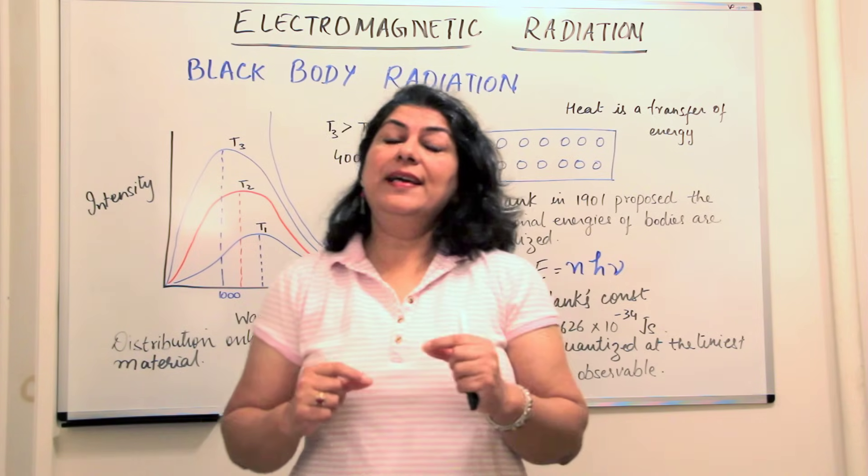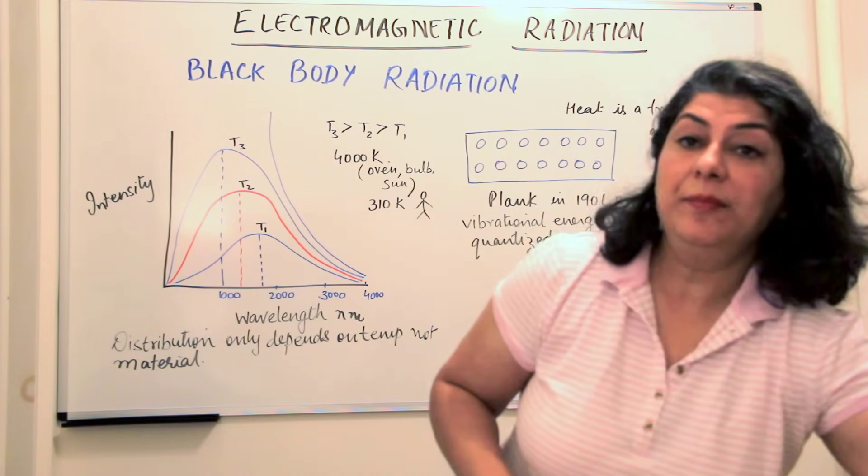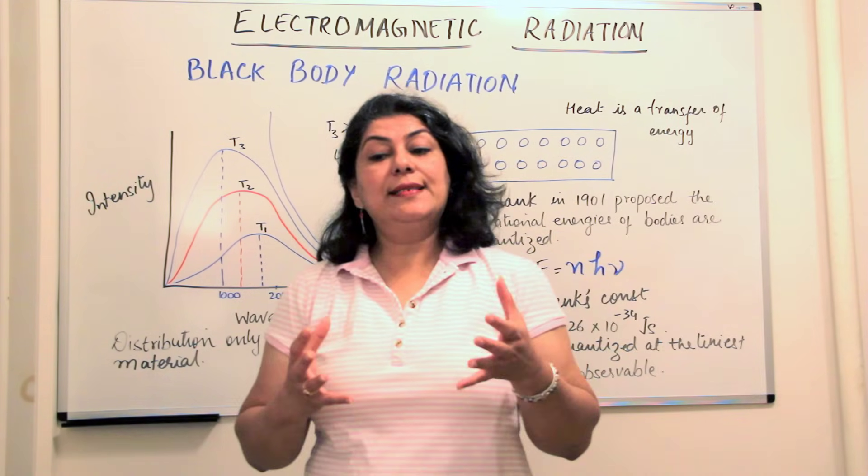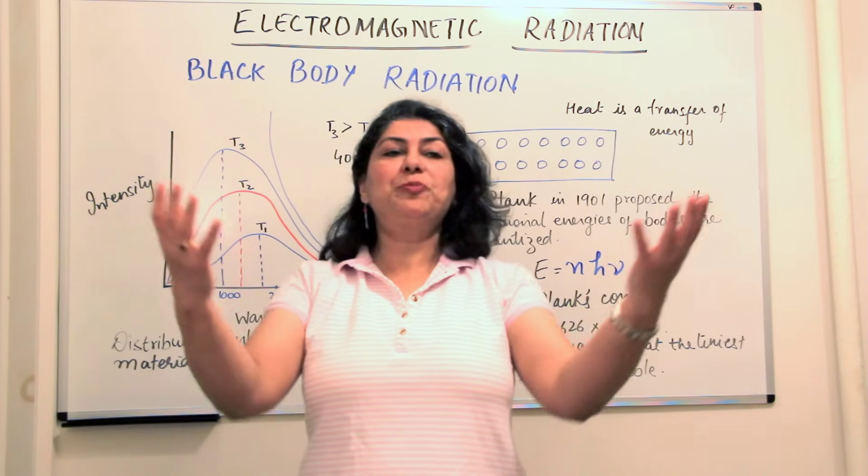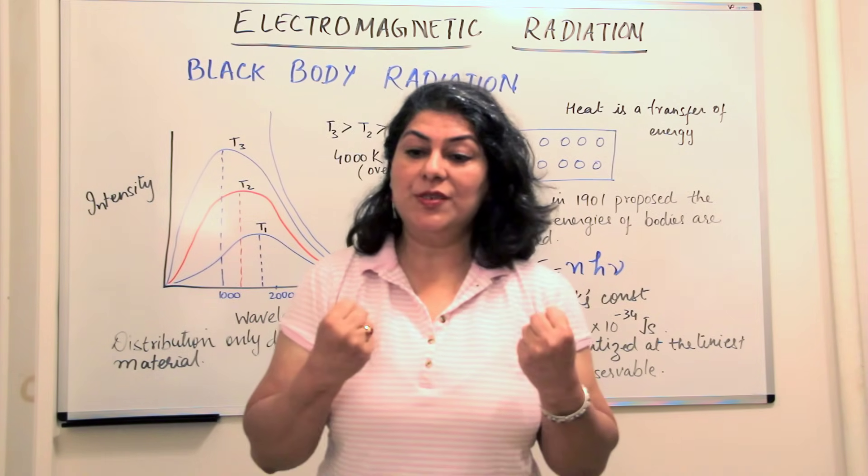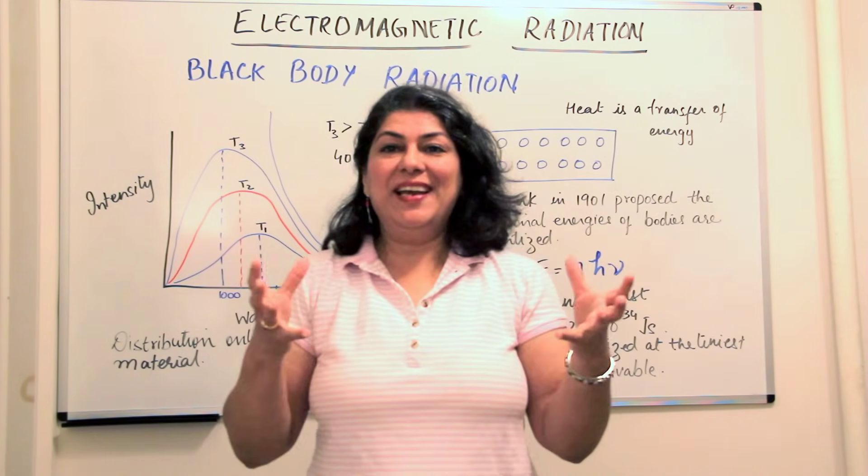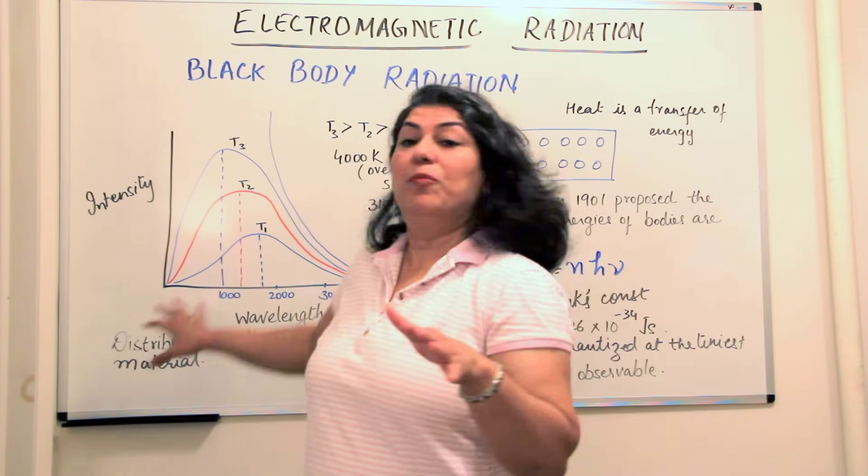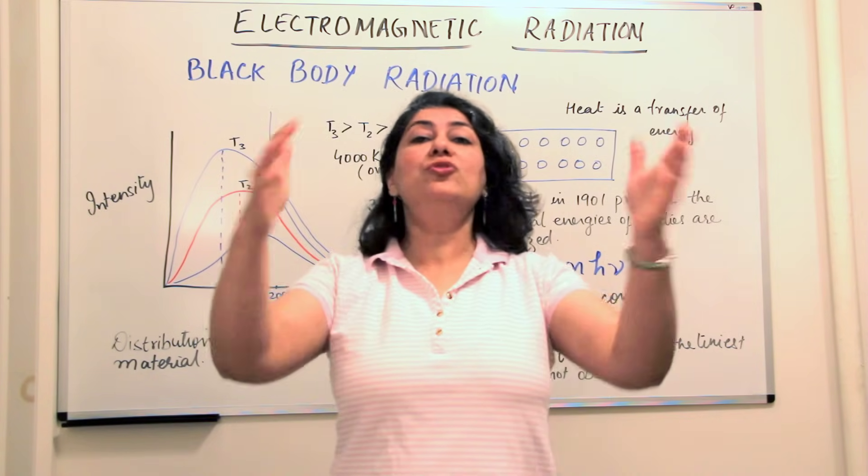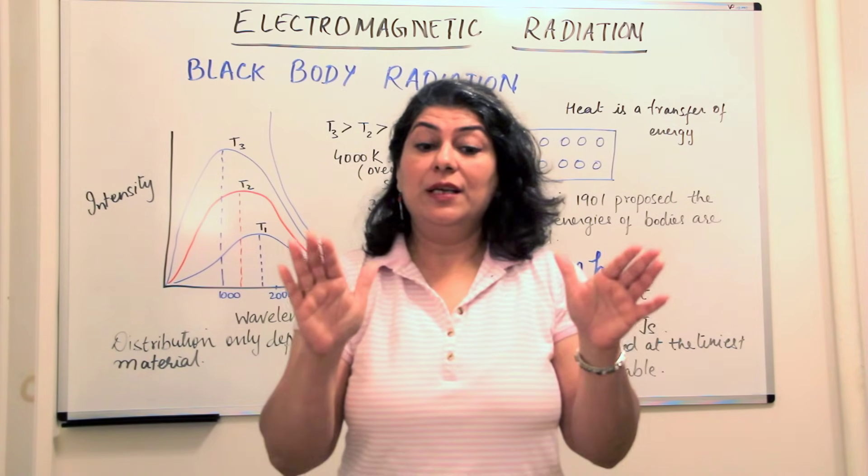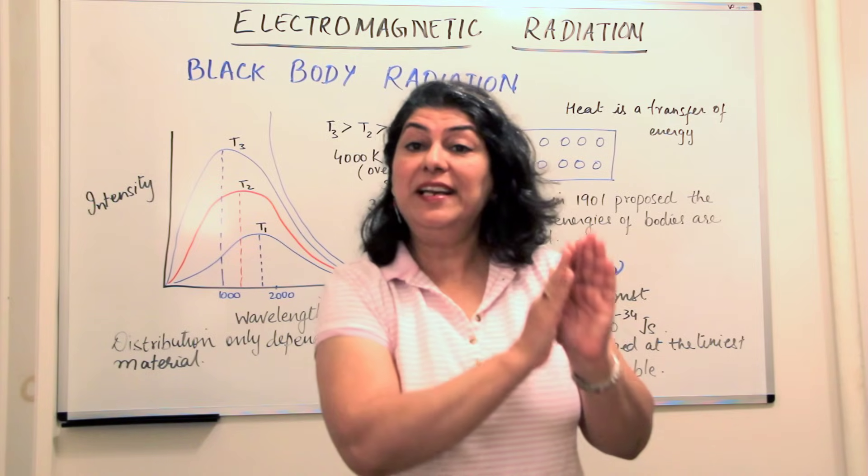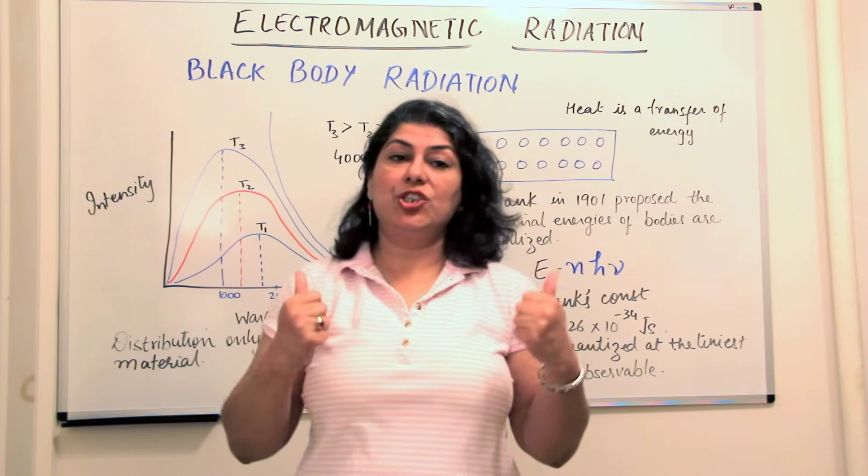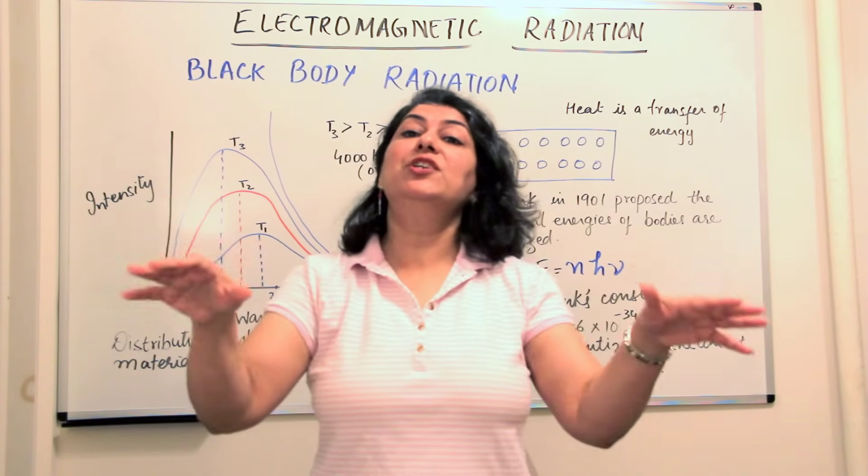A black body is supposed to be an ideal body, ideal because it is expected to absorb all radiations and when you heat it up, it releases the radiations that it had absorbed. Therefore, a body would release only those radiations which it has absorbed. A black body being the ideal body which absorbs all radiations should give out all radiations too.